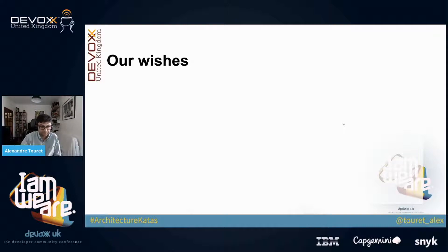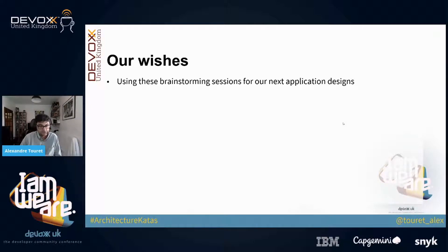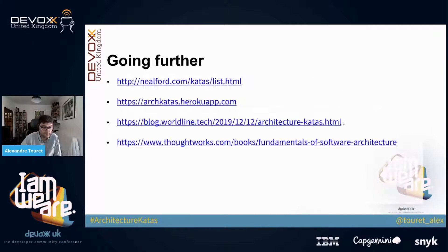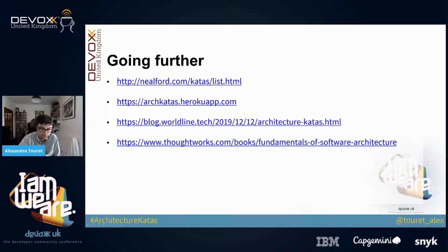As for our wishes: we would like to use the kata designs as a knowledge base to be referenced during our next application design sessions. We would also like to integrate architecture katas into our in-house software architecture training sessions. If you want to go further, you can check the first two links for examples of architecture kata subjects and how to organize them, and the third link for an article I co-wrote with a colleague about architecture katas.